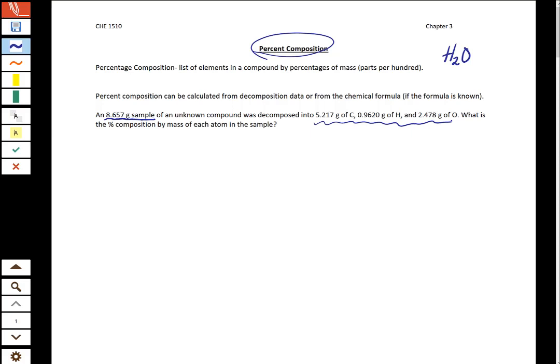In all percentages, remember that no matter what, your percentage is always a part out of a whole, and because it's a percent we multiply by 100. And so in this case we have three different parts: carbon, hydrogen, and oxygen. And then our whole is the mass of the sample.